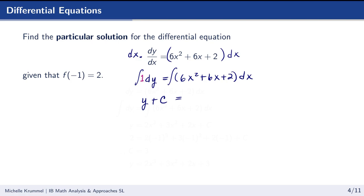We omit the constant of integration on the left-hand side going forward, since it always combines with the constant on the right. If all we needed was the general solution, we'd be done. But we need to find the particular solution using f of negative 1 equals 2, meaning when x equals negative 1, y equals 2. Substituting: 2 equals negative 2 plus 3 minus 2 plus c, giving c equals 3.